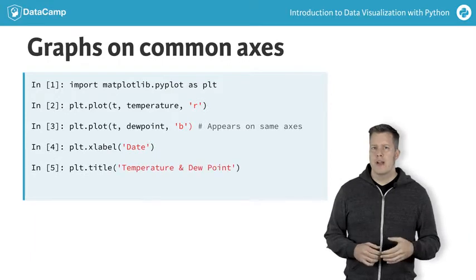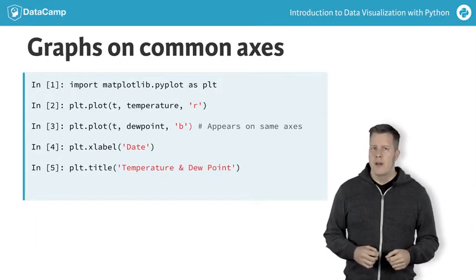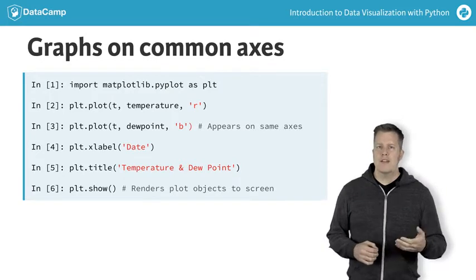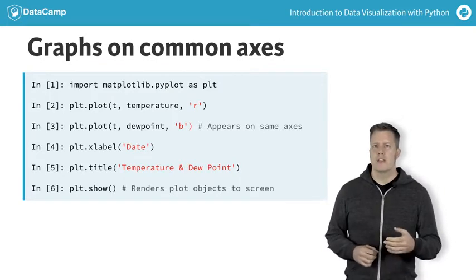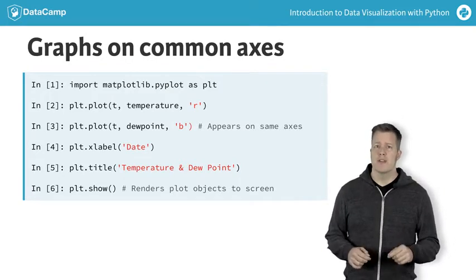The next two lines create a label for the horizontal axis and a title. The last line with the show command actually displays the figure on screen once the sequence of plot objects from our prior instructions have been positioned.